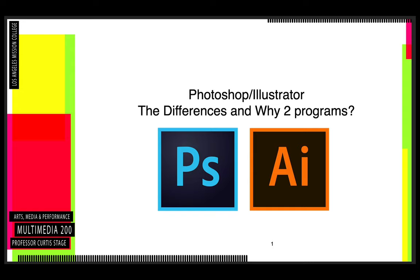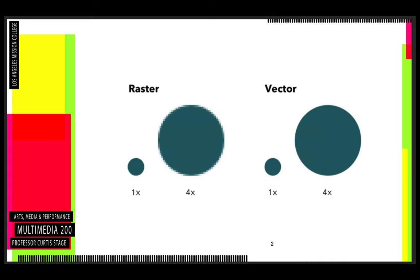We're going to look at what the differences are between the two programs, Photoshop and Illustrator. We've been using Photoshop quite a bit in my classes, and we've transitioned a little bit to Illustrator. I wanted to talk about why we would use Illustrator as opposed to Photoshop. The number one reason is: Photoshop is a raster-based, bitmap-based image-making platform, and Illustrator is a vector-based platform.